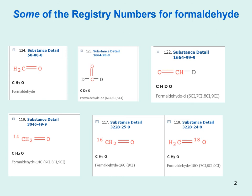This means that when looking for any substance — even something as simple as formaldehyde — you can take the parent substance, that number 50-00-0, and then decide what other registry numbers you may want to include. Most of the time, just the parent registry number is enough.